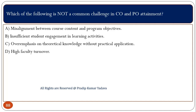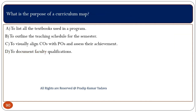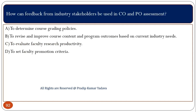Which of the following is not a common challenge in CO and PO attainment? That is option D: no relation between CO and PO. What is the purpose of a curriculum map? The main purpose of a curriculum map is to visually align COs with POs and assess their achievement. How can feedback from industry stakeholders be used in CO and PO assessment? Feedback from industry stakeholders can help to revise and improve course content and program outcomes based on current industry needs.